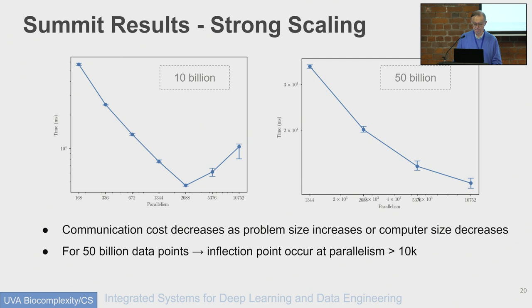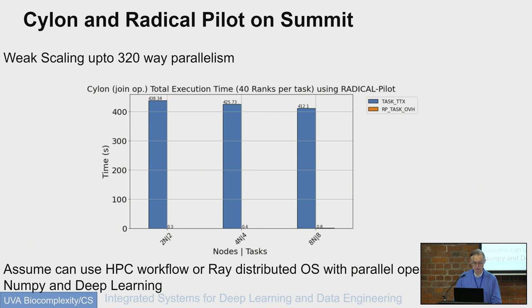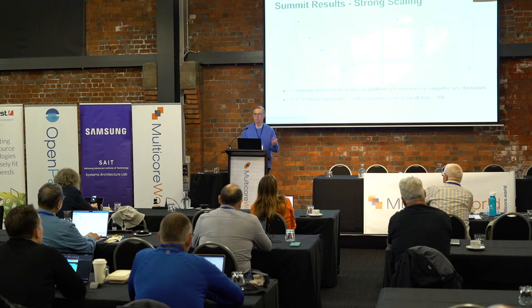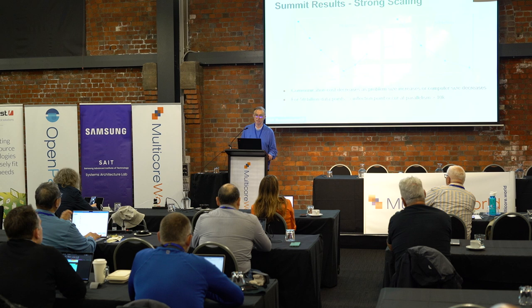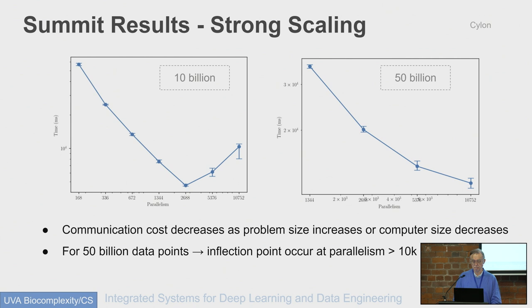Here are some results from Summit up to 10,000 cores, and for 50 billion rows the performance is quite reasonable — just typical parallel computing numbers. On the GPU question: this is not using GPUs. There is a GPU version, but NVIDIA has a huge effort called Rapids devoted to GPU data frames. There is no reason anything said here wouldn't equally apply to GPUs; we just have limited GPU support so far.